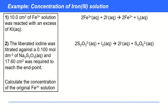Let's do an example: working out the concentration of an iron(III) solution. We've been given information about an Fe³⁺ solution reacting with an excess of potassium iodide, which produced some iodine — that's this first reaction. That liberated iodine was then titrated against some sodium thiosulfate, which is a reaction with the thiosulfate ion, and this is how much was required to reach the end point.